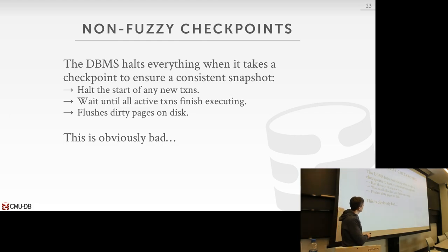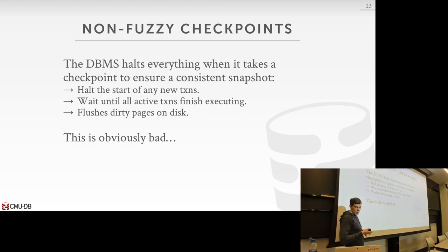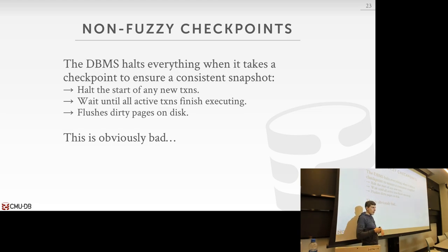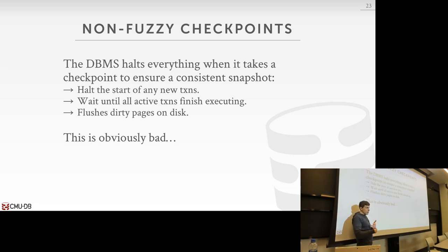The first bad way: we're going to halt the execution of any new transaction and then take the checkpoint. This guarantees that pages written out to disk are consistent — there are no torn updates from a transaction running halfway through. Basically, on the front end we halt the execution of any new transaction and then wait for all workers to finish executing any transaction that's already running. This is obviously bad because we have to wait until all transactions are finished; we can't start executing anything new. If we have one transaction that's going to take five hours, we have to wait five hours before we can take our checkpoint, and during that time we can't execute any other transaction — our system looks completely unresponsive.